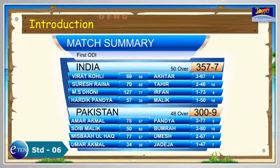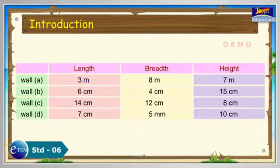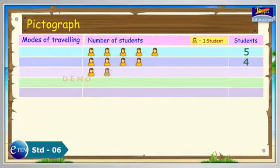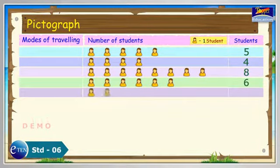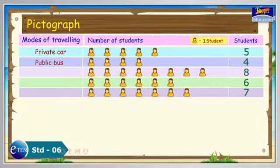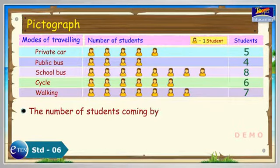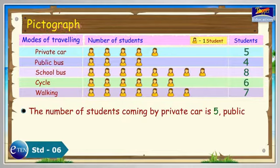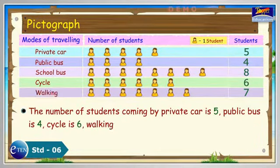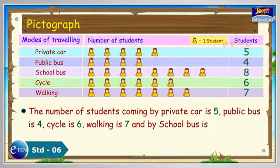A data is a collection of numbers gathered to give some information. The data in its original form is called raw data. It shows the survey of students coming to school through different modes of transport. From the pictograph, we find that the number of students coming by private car is 5, public bus is 4, cycle is 6, walking is 7, and by school bus is 8.